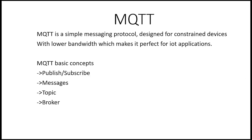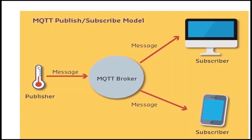The messaging protocol we use in our project is called MQTT. It is designed for constrained devices with lower bandwidth, which makes it perfect for IoT applications. The device records the temperature and publishes the data into a particular topic, and only those devices subscribed to that topic will receive the message — in this case, a laptop and a smartphone.